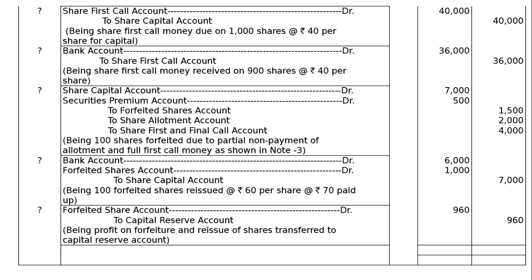Please write down Rs.1,000 for the forfeited shares debit in the reissue entry, then total all entries. In this question we have been asked to prepare a cash book, so you should not pass bank entries in the journal — you have to prepare a cash book instead. Please rectify the figure of 960 to 500, correct the totaling of the journal, and do not write down bank entries in the journal.